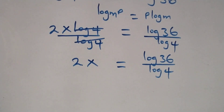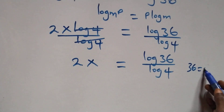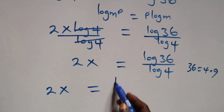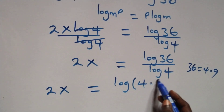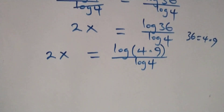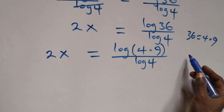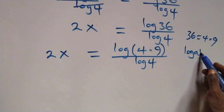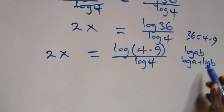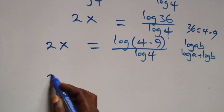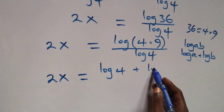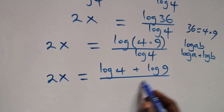Here, 36 can be written as 4 times 9. Applying the log product rule — log(a times b) is the same as log a plus log b — what we have becomes 2x equals log 4 plus log 9, all over log 4.